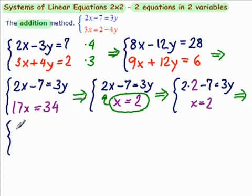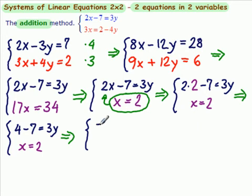So we have 4 minus 7 equals 3y and we're dragging along x equals 2. We're solving this equation here that is now in one variable. So how much is 4 minus 7? Minus 3 equals 3y and x equals 2.